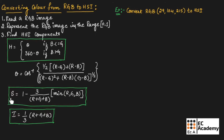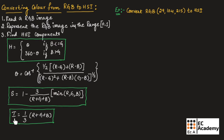Then we can find the saturation using the formula: S equals 1 minus 3 divided by (R plus G plus B) multiplied by the minimum value among R, G, and B. Then we can find the intensity using the formula: I equals 1/3 times (R plus G plus B). So this is how we can convert from RGB to HSI.